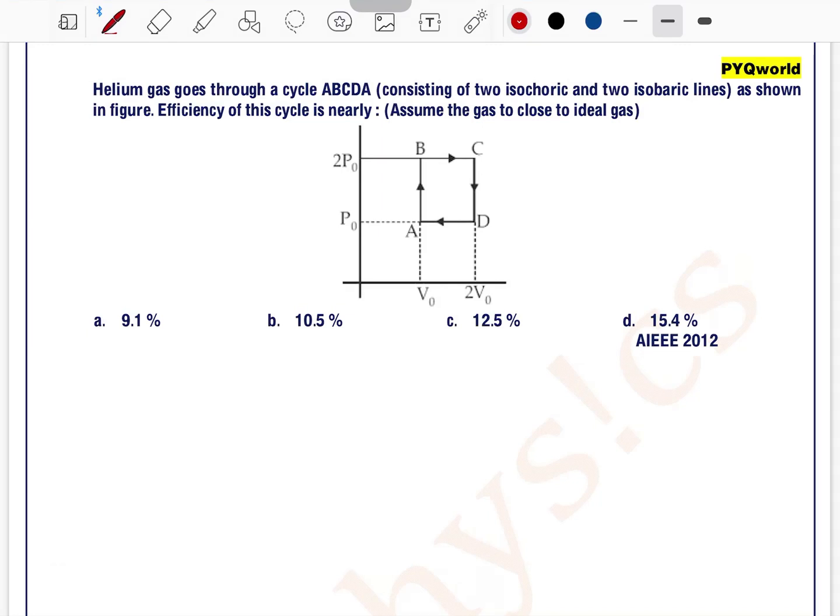Helium gas goes through a cycle ABCDA consisting of two isochoric and two isobaric lines as shown in figure. Efficiency of this cycle is nearly? See, efficiency of a cycle formula can be written as eta equals W divided by heat supplied. How to find W?